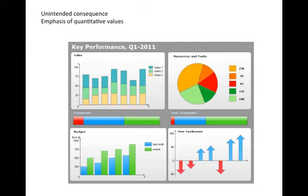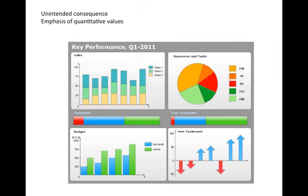Also, if we only emphasize quantitative things, some important aspects of a corporation will be ignored — like the well-being of employees or community service — things that are harder to quantify. Because it's easy to measure certain things, our attention goes there and we lose focus on others. There needs to be real thinking about KPIs and putting them in the right context, recognizing that many important things in a corporation cannot be quantified.